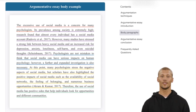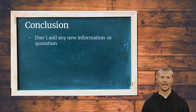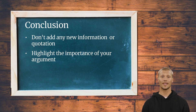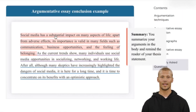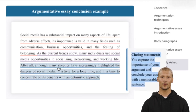Let's now move into the conclusion, which is the last paragraph of an argumentative essay. The conclusion is where you sum up your argumentative essay. The golden rule here is not to add any new information or quotation. However, don't forget to highlight the significance of your argument and rephrase your thesis statement. The perfect conclusion should also include a summary, importance, and a memorable concluding sentence. The summary is where you summarize your arguments in the body and remind the reader of your thesis statement. Then stress the importance of your argument by giving examples from real life. In the closing statement, capture the importance of your argument and conclude your essay with a memorable sentence.